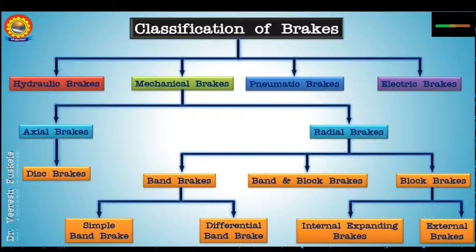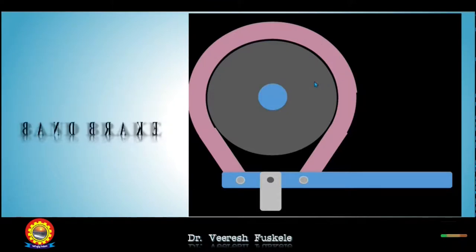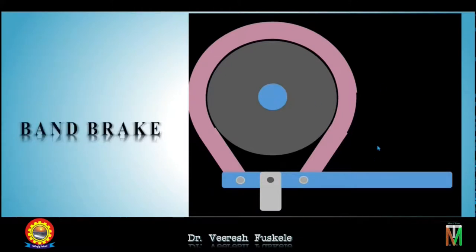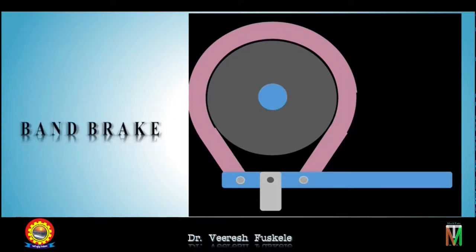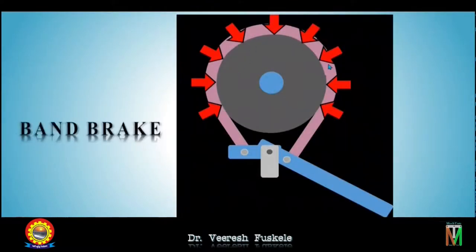Having seen the classification of brakes, let us see the various brakes one by one. Band brake: it consists of a rope, belt, or flexible steel band which is lined with frictional material. This band is pressed against the external surface of a cylindrical drum when the brake is applied. The force is applied at the free end of the lever. This is a simple band brake, which will neither have self-energizing properties nor can it be self-locking. The drum is rotating in the clockwise direction, so one side will be the tight side (T1) and the other side the slack side (T2). The force is applied in the radial direction, so this is a radial brake.